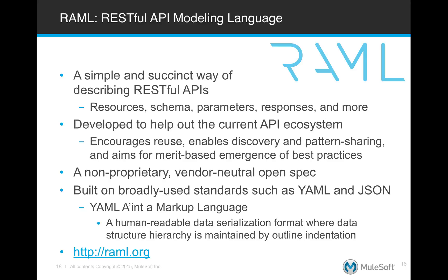So RAML — RESTful API Modeling Language — is a simple and clean way of describing RESTful APIs, all the things that the consumer might need to know about: the resources, schemas, parameters, responses, and more. It's developed to help out the current API ecosystem. The hope is to encourage reuse, enable discoverability, and pattern sharing, and aim for best practices in this new world of RESTful APIs. It's non-proprietary in a vendor-neutral open spec, and built on broadly used standards such as YAML and JSON.